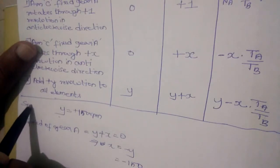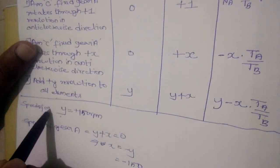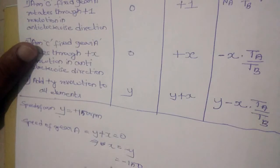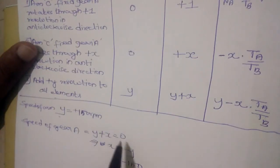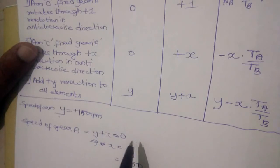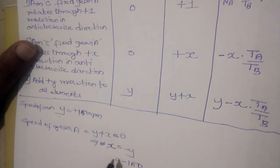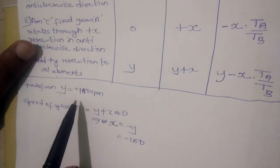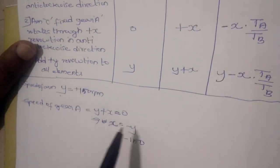This is speed of gear A. Now x is equal to minus 150 is known from the equation substituting y plus x is equal to 0. Since speed of gear A is equal to 0, we equate this equation y plus x is equal to 0. Therefore we get the value of x as minus 150. Now two values are known. x and y values are known.